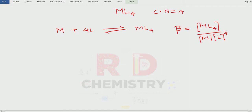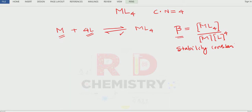Now what is the meaning of stability of the complex? Stability of the complex means it is the degree of association — the degree of association of the metal and the ligand, the two reactant species involved in the equilibrium. This equilibrium constant is also called the stability constant. As more and more product (complex) is formed, the beta value increases, meaning the equilibrium is more towards the product side, and the more stable is the complex formed.